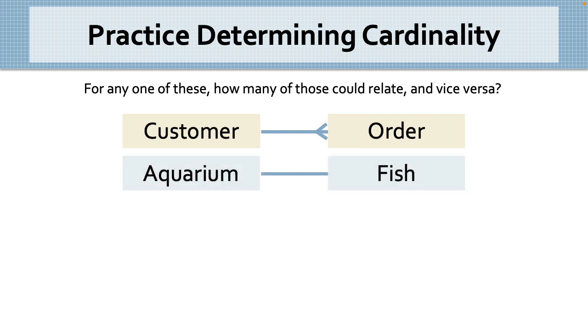Next one. Aquarium and fish. For any one aquarium, how many fish could live there? Many fish. So, we draw the crow's feet. Then, from the other side, for any one fish, how many aquariums could it live in? Well, only one at a time, but it depends on whether we need to keep track of the history of every aquarium a fish has ever lived in, or if we only care about where they are right now. And this is why I limited the scope of our kindergarten database to only tracking which class a student is in right now, because it changes the answer to this question, which complicates things a bit more. Don't worry, we'll deal with that issue. But I did not want to drop it on you all at once. Back to the fish. Let's say we only care about which aquarium a fish lives in right now, in which case, a fish can only live in one aquarium at a time. So, we leave a straight line on the aquarium side.